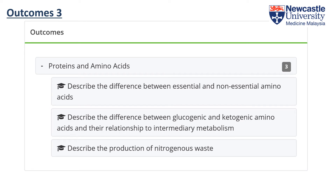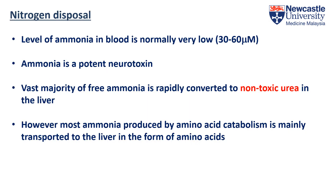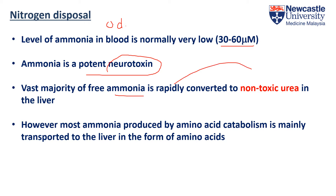In the third learning outcome we will look at the production of nitrogenous waste. Ammonia is the product of oxidative deamination from amino acids, and their level is very low, about 30 to 60 micromolar, because it is a potent neurotoxin. So what we do is convert the toxic ammonia into the non-toxic urea in our liver.